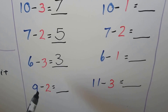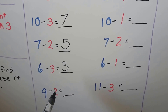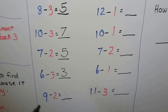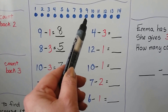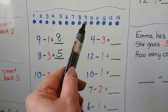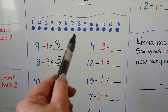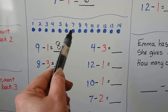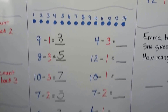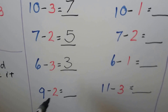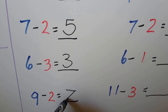9 minus 2. We start at the 9 and count back 2. There's the 9. We count back 2: 1, 2. 9 minus 2 — that brings us to 7. 9 minus 2 is equal to 7.